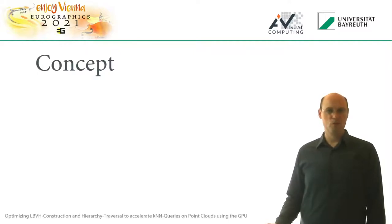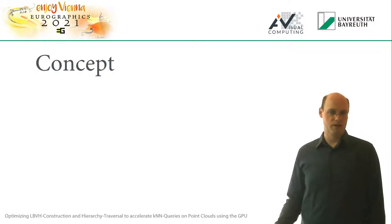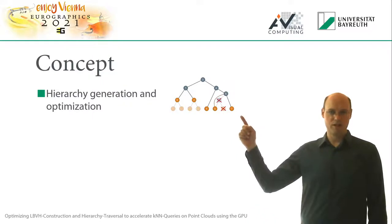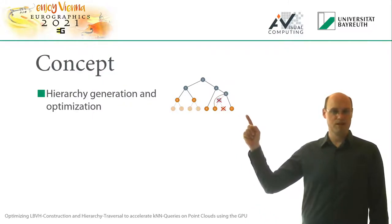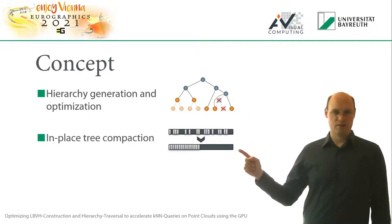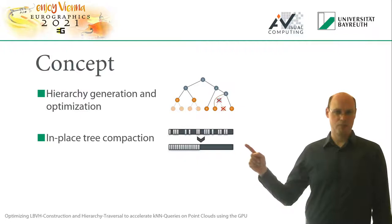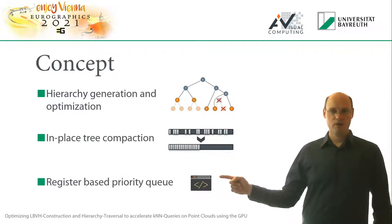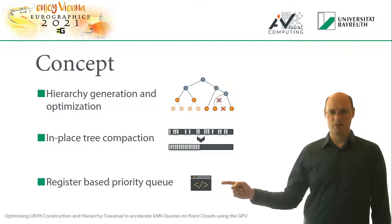Before describing the details, I will give a quick overview of the complete algorithm. First, we generate a KD tree on the GPU and optimize it using a simple but efficient heuristic. The resulting data structure is then compacted using an in-place compaction. And finally, we use an optimized GPU implementation for finding the K nearest neighbors.